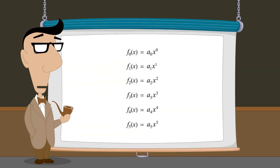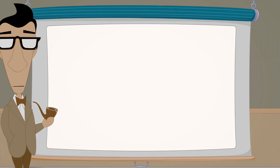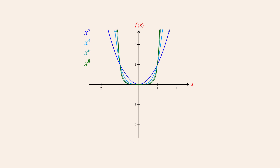Monomial functions with even exponents have graphs with similar shapes. For example, let's compare the graphs of x-squared, x to the fourth power, x to the sixth power, and x to the eighth power. These graphs have a number of things in common — for instance, they all pass through the origin, as well as the points one and negative one.